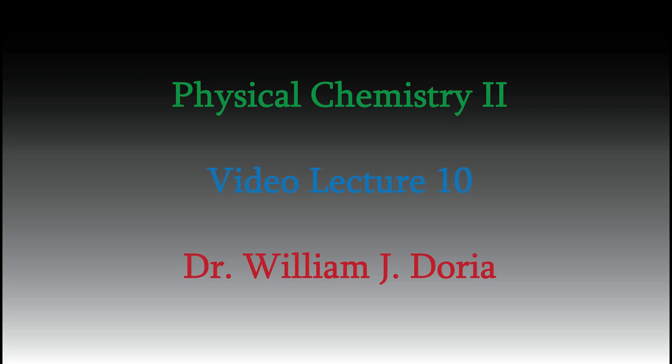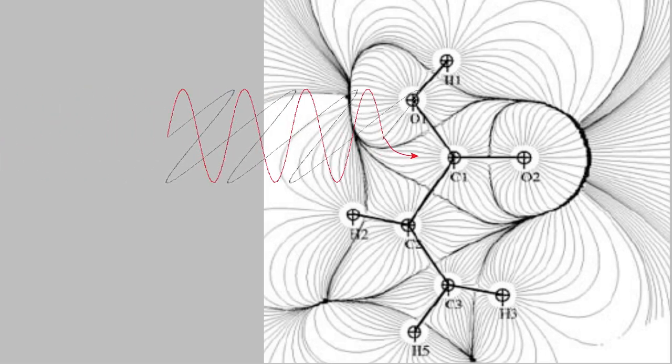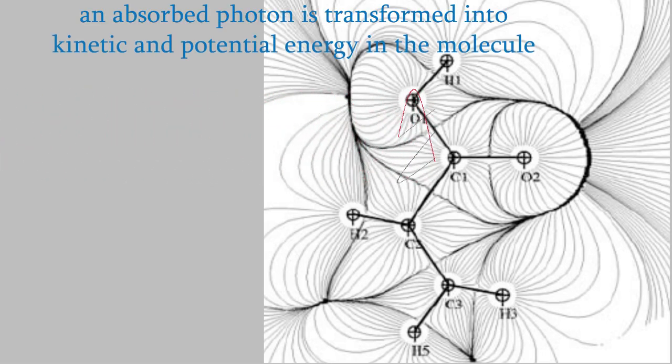Hi, and welcome again to my series of videos for Physical Chemistry 2. When we last met, we started talking about interactions between light and matter, and we saw that when a molecule absorbs a photon, the result can be an increase in the kinetic energy of the molecule, the potential energy, or a combination of both.